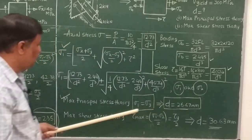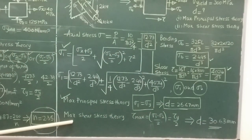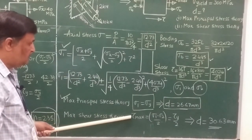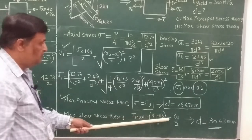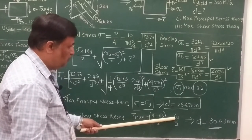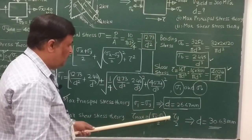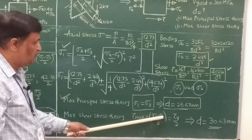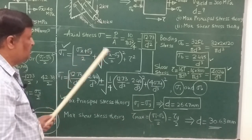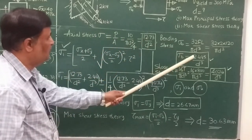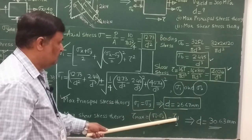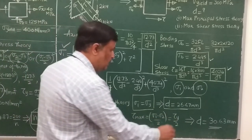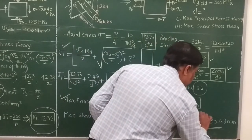Similarly, according to maximum shear stress theory, failure occurs when the maximum shear stress reaches the shear stress at yield point. The maximum shear stress is (σ₁ - σ₂)/2, and equating this to the shear stress at yield point divided by factor of safety, we get the diameter as 30.63 mm. So the diameters obtained are 26.67 mm by maximum principal stress theory and 30.63 mm by maximum shear stress theory.